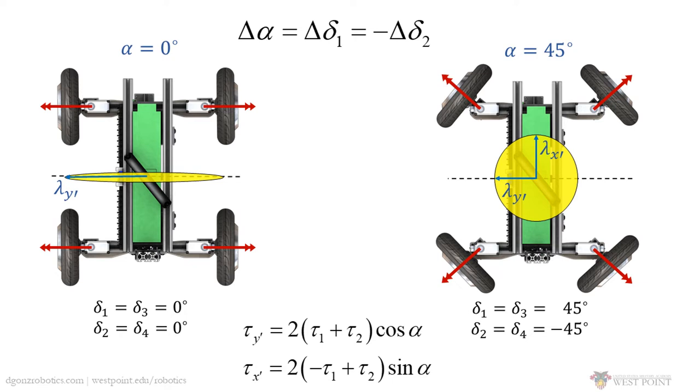If alpha is 45 degrees, we reach an isotropic configuration, where we can equally apply torque about the pitch and roll axes.